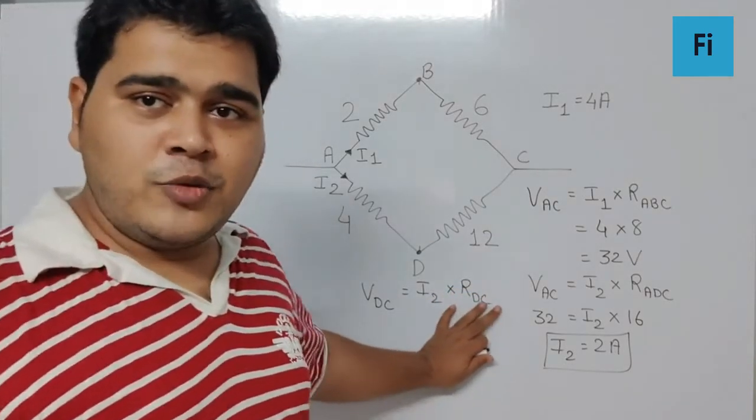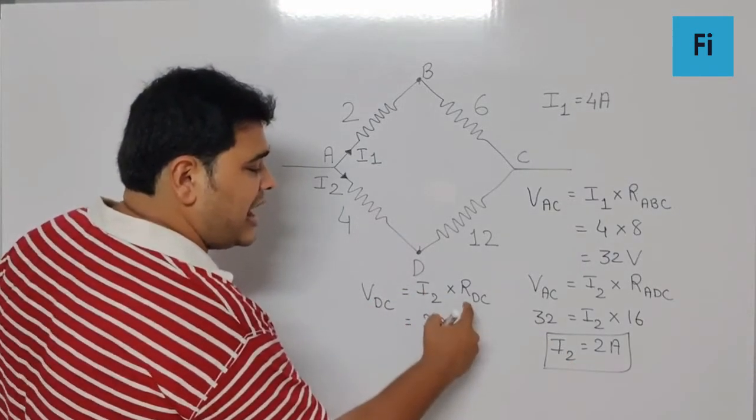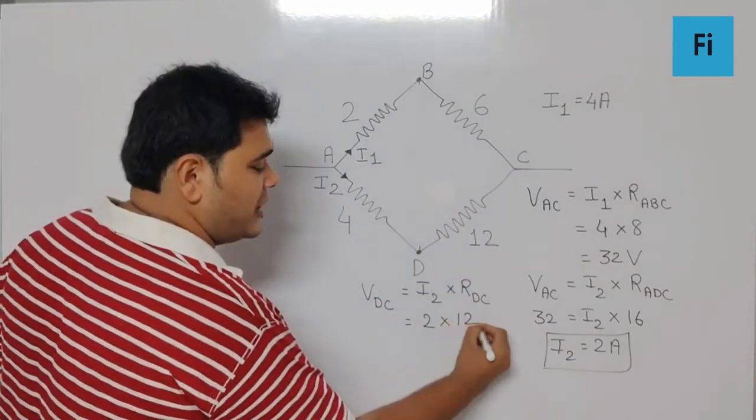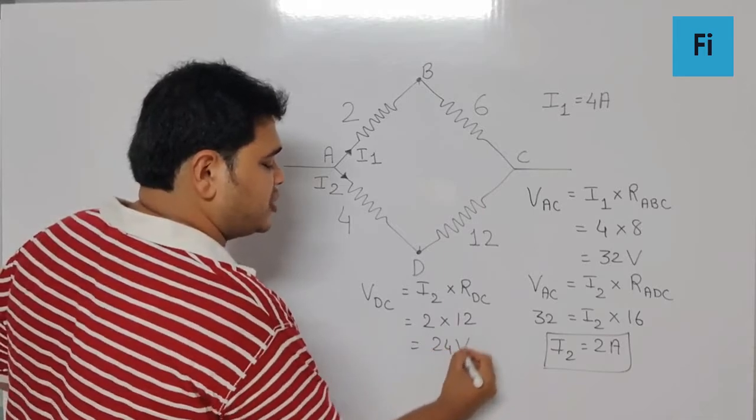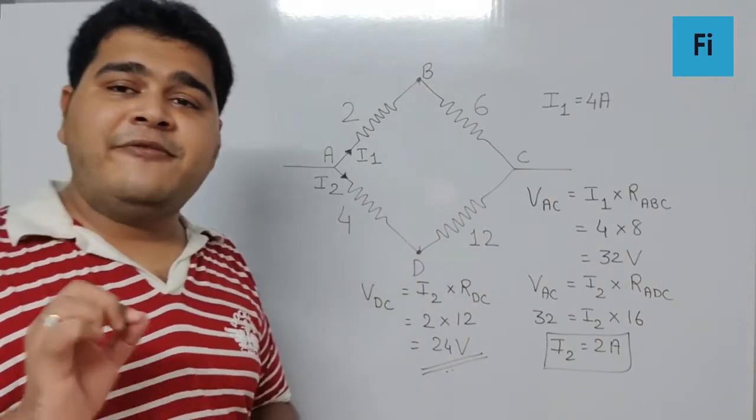I hope this point is very clear to you. So I2 we got as 2, R_DC we know as 12, and so the potential difference between point D and C is going to be 24 volts, and that is your final answer.